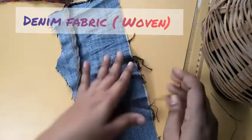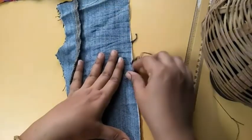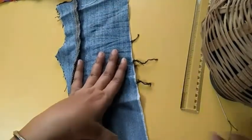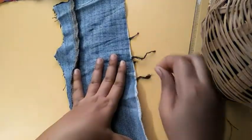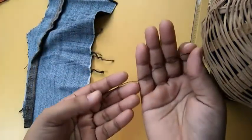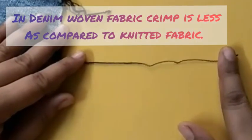And this is a denim, a woven fabric. I am removing the yarns so that I can show you the crimp difference between knitted fabric and woven fabric. As you can see, in woven fabric crimp is less.